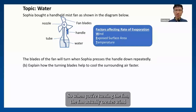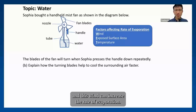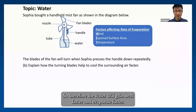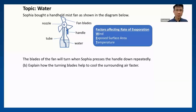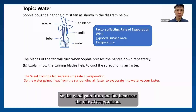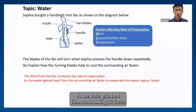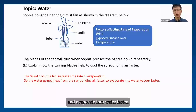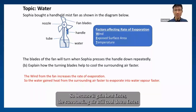When you turn the fan, the fan creates wind and this wind can increase the rate of evaporation. Therefore, the water will gain heat faster and evaporate faster. The wind from the fan increases the rate of evaporation, so the water gains heat from the surrounding air faster and evaporates faster, and the surrounding air will cool down faster.